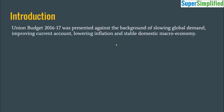The Economic Survey starts with an introduction: Union Budget 2016-17 was presented against the background of slowing global demand. The world economy had not yet recovered from the global slowdown when the budget was presented in 2016-17. The current account was improving and inflation was lowering — these were the prevailing conditions at the time.